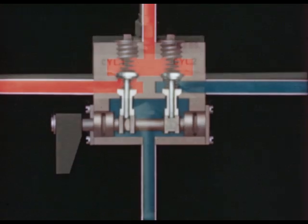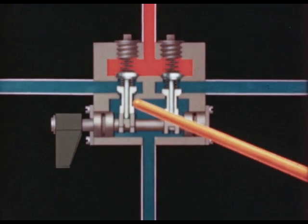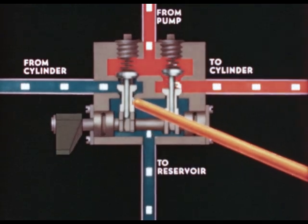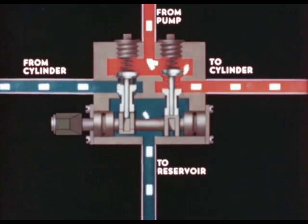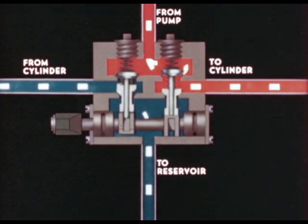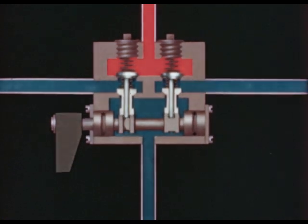Moving the handle of the valve one way first opens the return poppet from one end of the cylinder and then opens the pressure poppet to the other end. Moving the handle the other way reverses the order and causes the piston to move in the opposite direction.